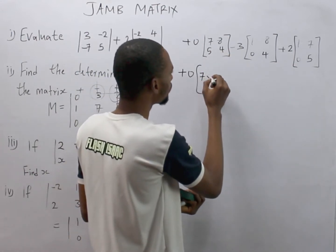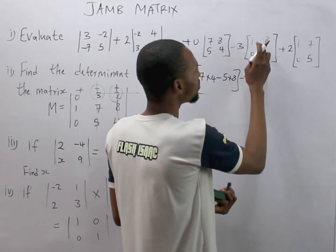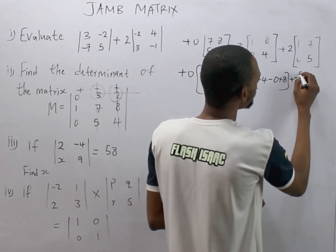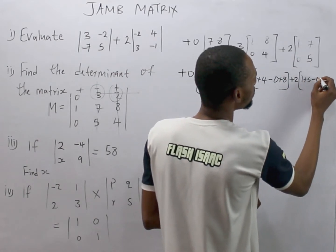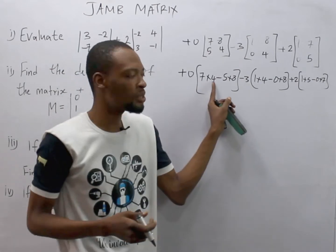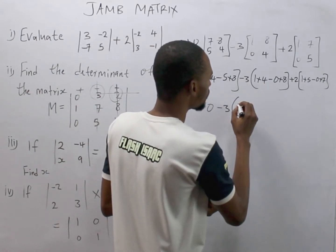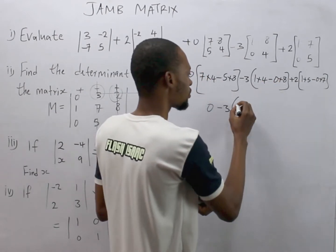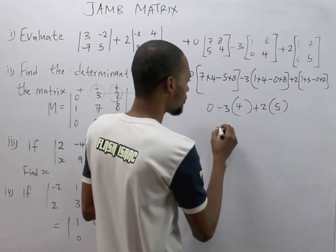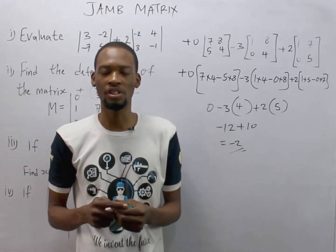The next step is to simplify by finding the determinant of each 2 by 2 sub-matrix. Plus zero times (7 times 4 minus 5 times 8), minus 3 times (1 times 4 minus 0 times 8), plus 2 times (1 times 5 minus 0 times 7). Since the first term is multiplied by zero it goes to zero. So we have: zero minus 3 times (4 minus 0) plus 2 times (5 minus 0), giving minus 12 plus 10, which equals minus 2. So the determinant of this 3 by 3 matrix is minus 2.